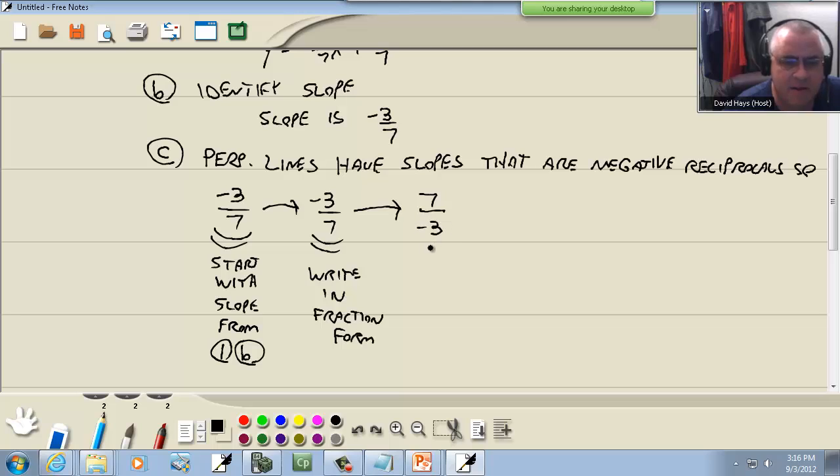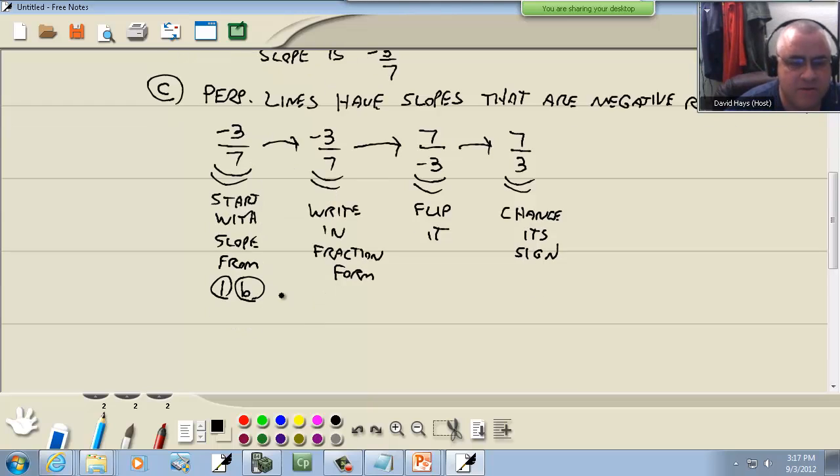Then we're going to flip it - top goes to the bottom, bottom goes to the top. That's the reciprocal part; reciprocal means fraction flipped. And then we're going to change its sign. So it went from a negative 3/7 to a positive 7/3. So the M we're trying to find is going to be 7/3. Now that seems like a lot, but it becomes very simple once negative reciprocals clicks with you. Assuming it's in fraction form: flip the fraction, change the sign.